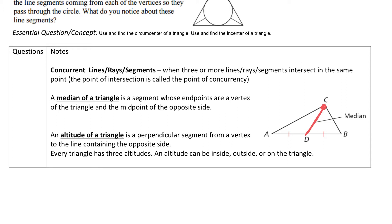The altitude of a triangle is a perpendicular segment from a vertex to a line containing the opposite side. Every triangle will have three altitudes, just like every triangle will have three medians. If I find the midpoint and draw it, this would be a second median, and then this would be the third median. Now these medians will intersect right here, and we will learn what that intersection is in a minute.